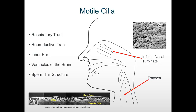Motile cilia can be found throughout the body, and their primary function is to beat to aid the movement of fluid. In the respiratory tract, they beat together to aid the movement of mucus, which captures dirt and bacteria you inhale, and the mucus with the dirt and bacteria needs to be moved up and out of the airways. In the reproductive tract, they line the fallopian tubes and aid the transport of oocytes and embryos towards the uterus. They can be found in the inner ear and in the ventricles of the brain to help aid the movement of cerebral spinal fluid, and they also make up the sperm tail structure, which aids the movement of the sperm.